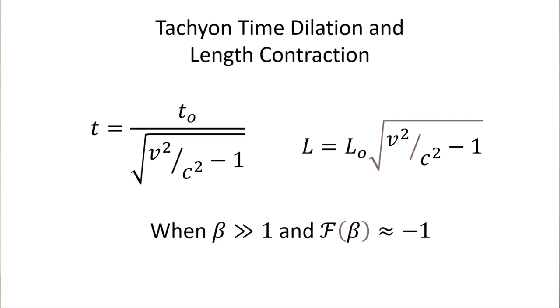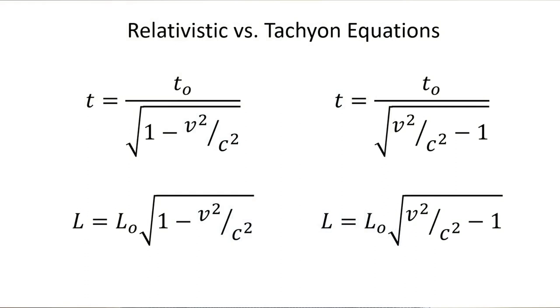Comparing both sets of equations: on the left are the relativistic equations for a slower-than-light vehicle; on the right are the tachyon dilation and tachyon length contraction equations. The similarity is notable — just notice in the denominator that the factors flip positions, but they give vastly different radical results.